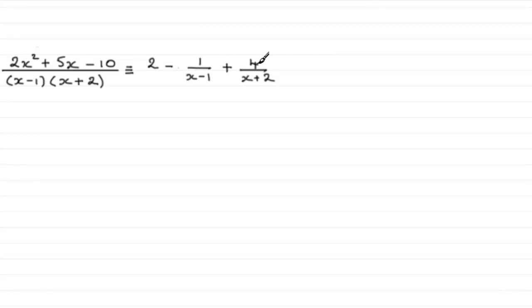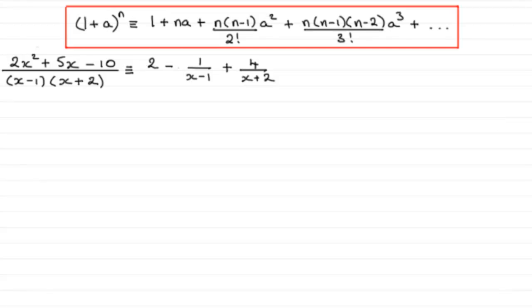Before we start, a quick reminder: the binomial expansion formula is used when n is not a positive integer. We have 1 plus a to the power n, which is identical to 1 plus n·a plus n(n−1)·a² over 2 factorial, and so on.